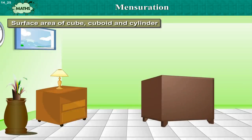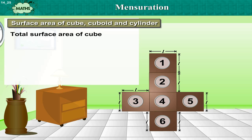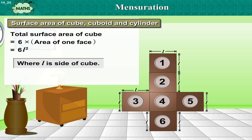Similarly, if we open a cube, we get 6 identical faces. Therefore, total surface area of cube is equal to 6 into area of 1 face, which is equal to 6L squared, where L is the side of the cube.